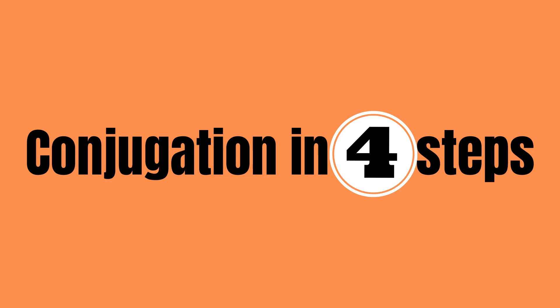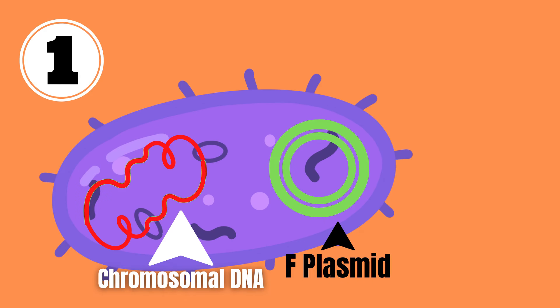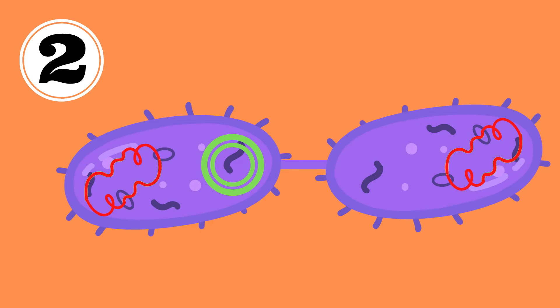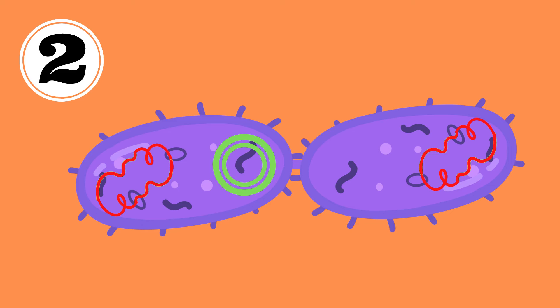Conjugation is carried out in four main steps. First, the process is initiated by the donor cell producing a pilus. Second, the pilus attaches to the recipient and draws the two bacteria together. Typically the genetic material is in the form of a plasmid, which is a small circular piece of DNA. The mobile plasmid is nicked and a single strand of DNA is then transferred to the recipient cell.